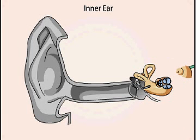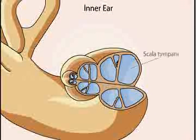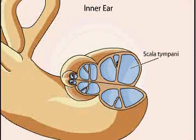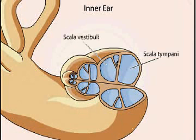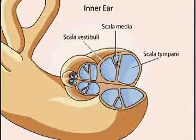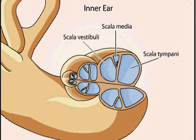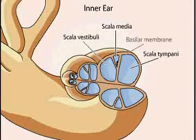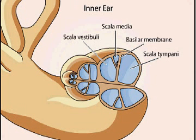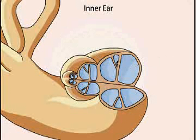Along the length of the cochlea are three parallel canals: the scala tympani, the scala vestibuli, and the scala media. The principal elements for converting sounds into neural activity are mainly found on the basilar membrane, which is a flexible structure that separates the scala tympani from the scala media.